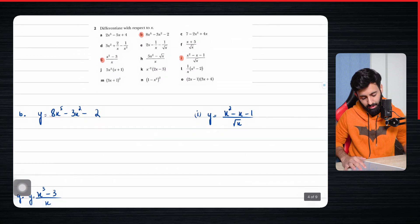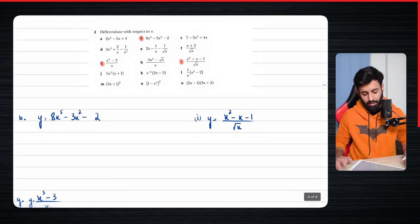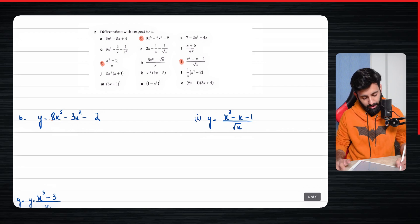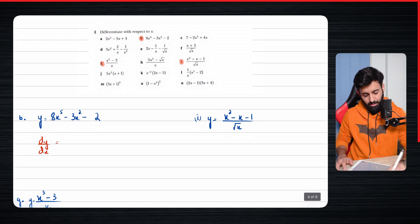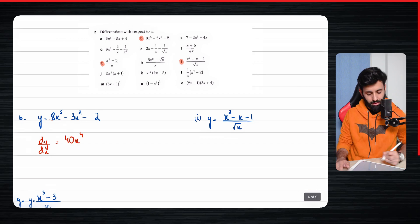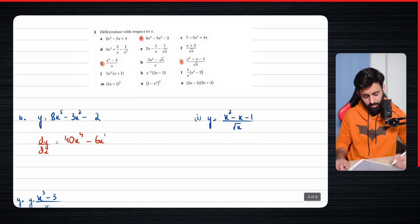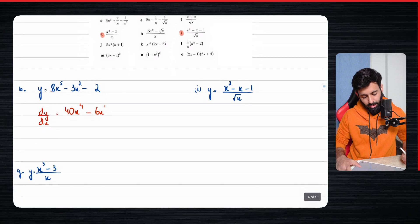Now we're going to do some slightly more complex questions where we have multiple terms making up one expression. Let's find dy/dx. For part b: 8 times 5 is 40, x to the power 5 minus 1 which is 4, minus 6 times x to the power 1 minus 1, which I'm not going to write at all. That was part b done.